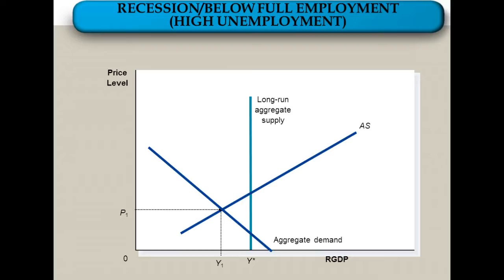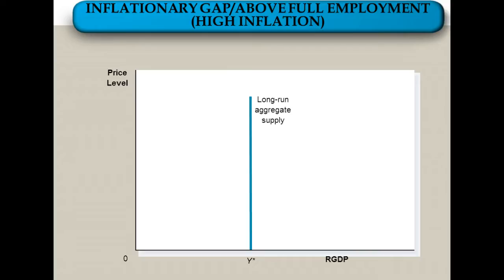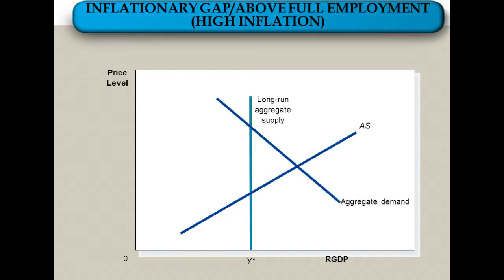The opposite of a recession or below full employment is what's known as an inflationary gap or above full employment. In this case, high inflation is our problem. Aggregate demand has actually shifted too far to the right. We have higher price levels, which means more inflation. We also have more GDP than what we would produce at long-run equilibrium, and therefore we're actually beginning to cut into the natural rate of unemployment, which also is not good. High inflation is essentially our problem when we have an inflationary gap, and it's caused by too much aggregate demand.